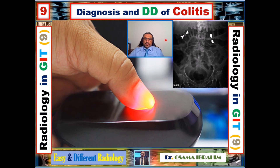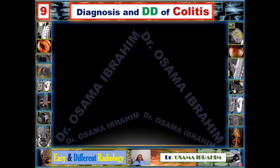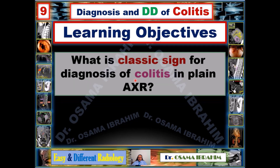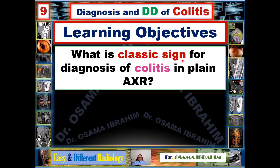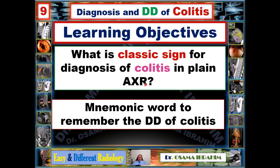Good day and welcome to a new presentation in easy and different radiology. Today is appointment number nine, and I want to talk about the diagnosis and differential diagnosis of colitis. My presentation will be fast, covering the differential diagnosis and how to remember it. The learning objectives include the classic thumb printing sign on abdominal X-ray and a mnemonic to recall the differential diagnosis of colitis on AXR or CT.